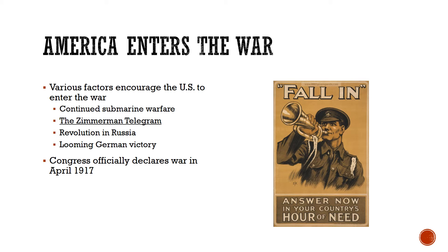Another factor is a revolution in Russia. Russia was one of the major powers fighting in the war, but the revolution weakens Russia and eventually causes them to drop out of the war. Because of that, it looks like Germany is about to win. The United States doesn't want this because they have loaned billions and billions of dollars to England and France — if England and France lose, they won't be able to pay the money back. As a result of all these things, the United States decides to declare war in 1917, about three years after the war began.